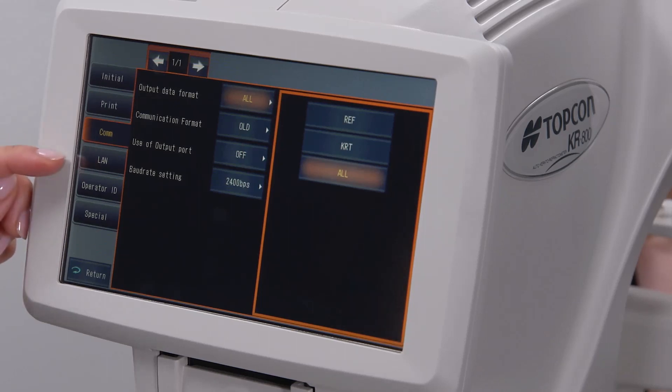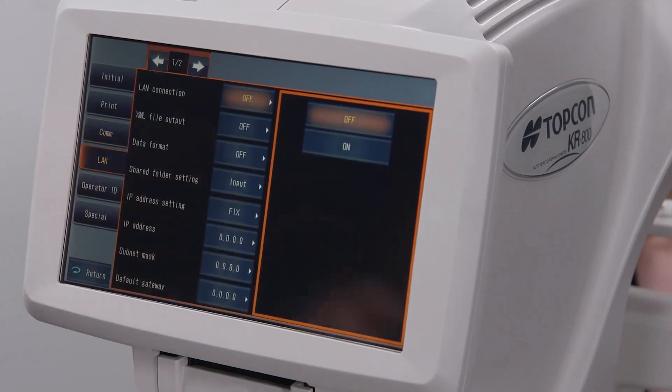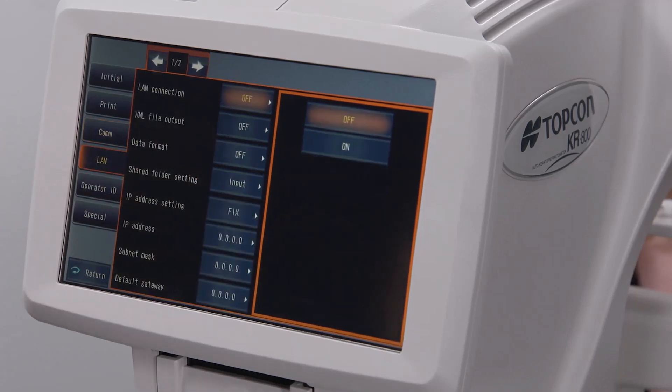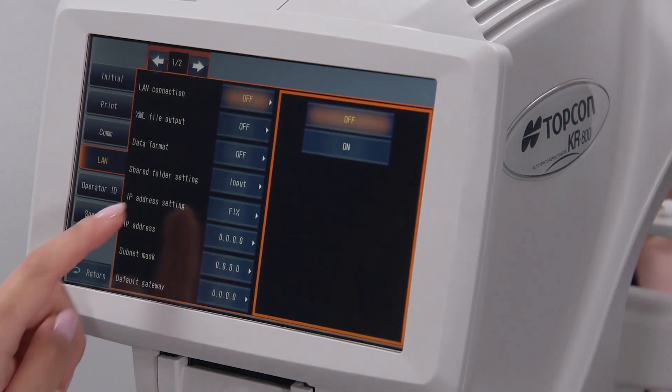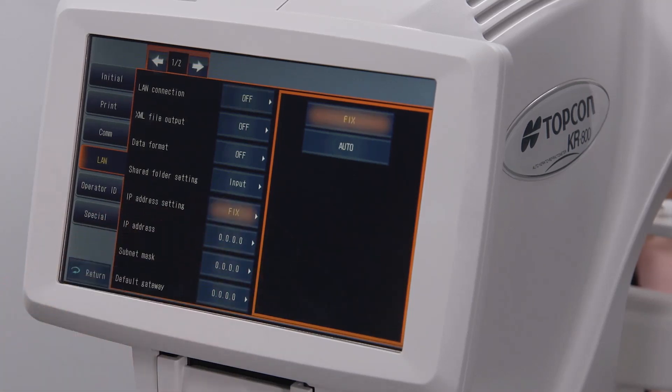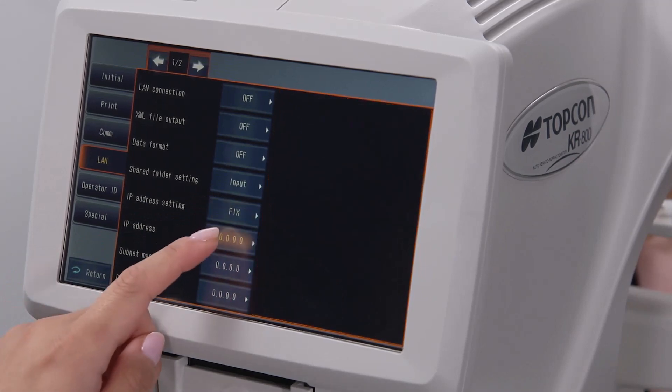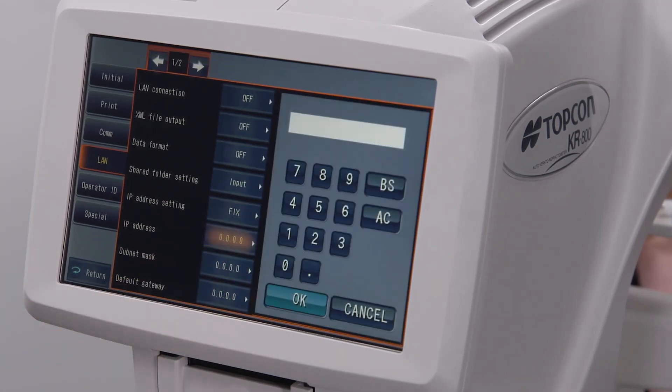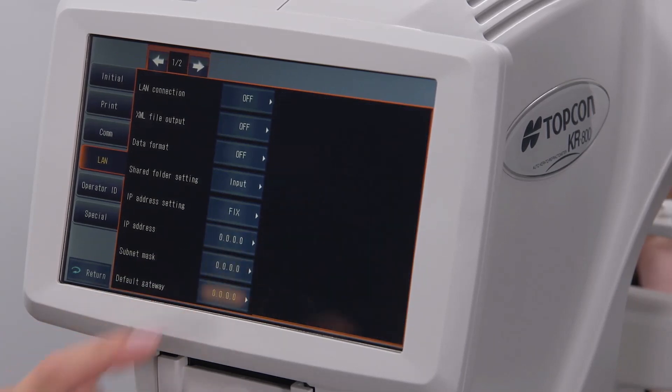The LAN or local area network tab contains options involving exporting data through an ethernet cable. These settings include whether the IP address will be automatically or manually assigned, and options to manually set the IP address, the subnet mask, and the default gateway.